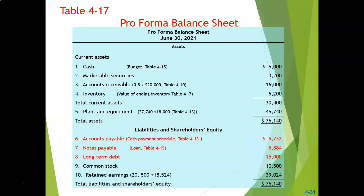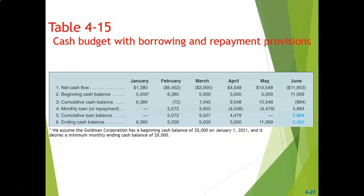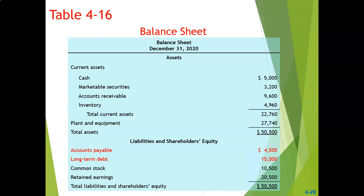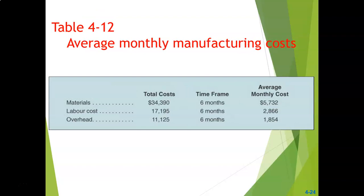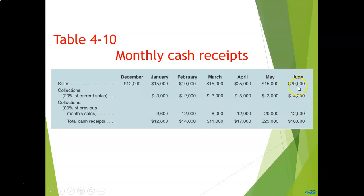The first item on the balance sheet — cash — comes from Table 4-1-5, the cash budget. We go to Table 4-1-5 and find the ending cash balance, which finds its way into our balance sheet as 5,000. Marketable securities remain unchanged. Accounts receivable comes from Table 4-10.